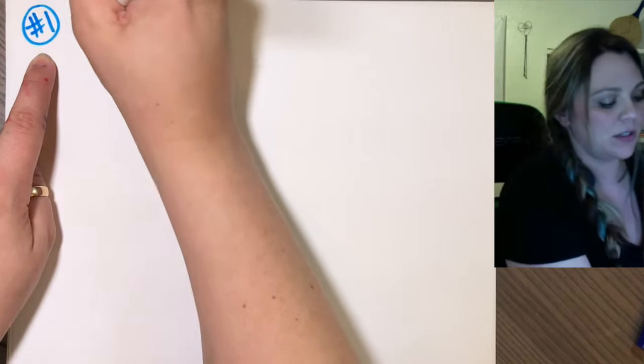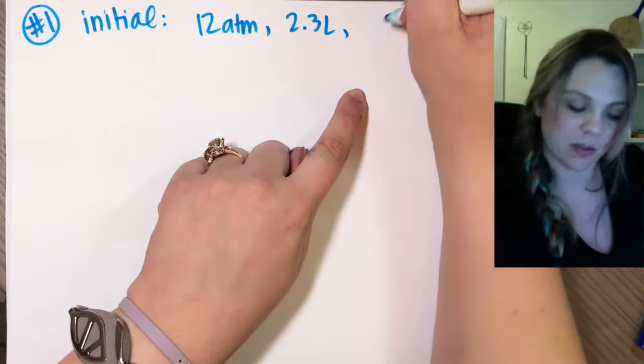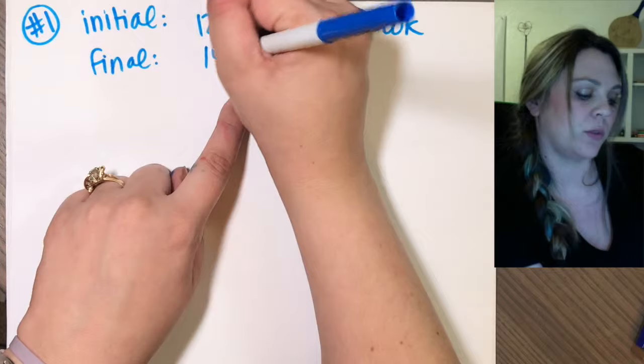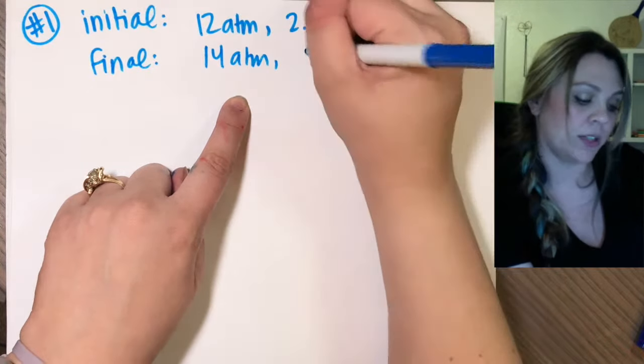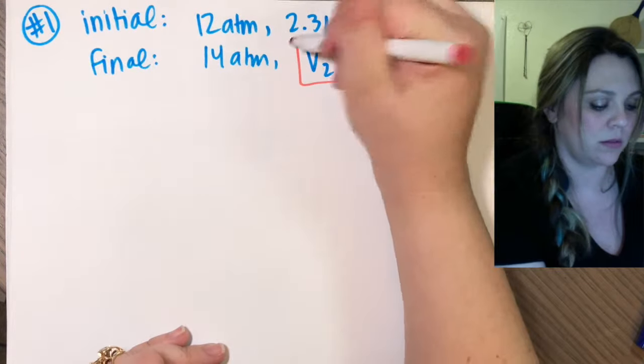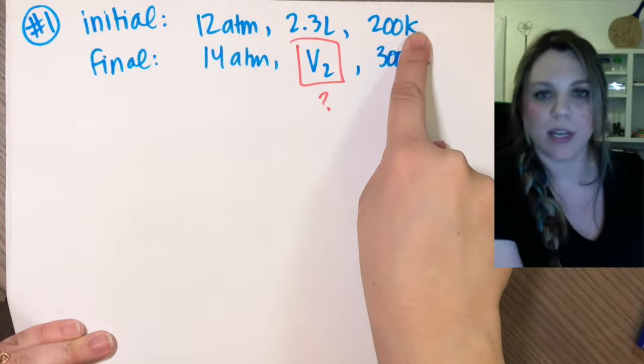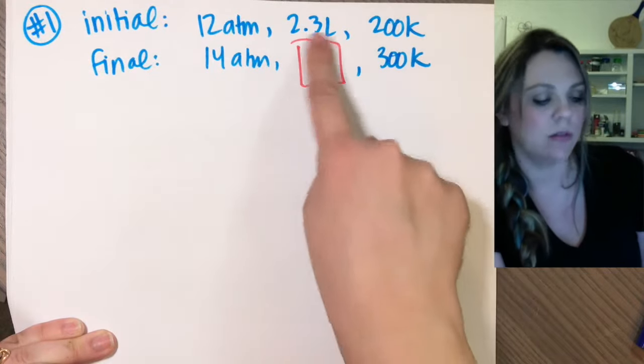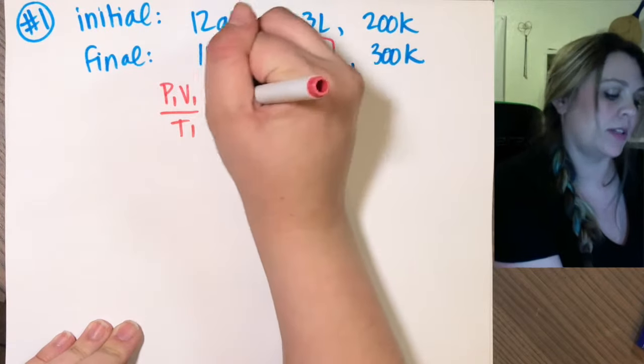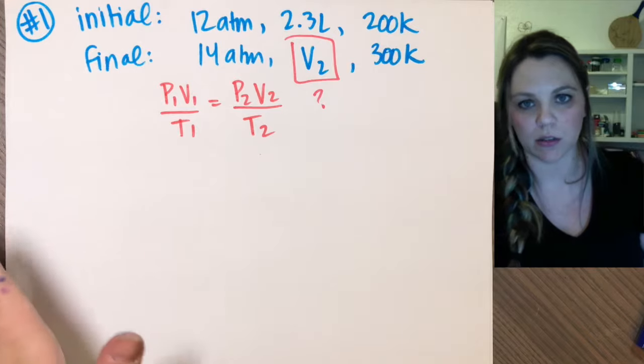Example number one. If I had an initial condition of 12 atmospheres, 2.3 liters, and 200 Kelvin, and my final conditions, I raise my pressure to 14 atmospheres, I don't know what my volume 2 is, and my temperature's also raised to 300 Kelvin. The question is, find volume 2. What is my new volume? This could be said in any type of very long-winded word equation, but just break it down. What are your initial conditions? What are your final conditions? What don't you know? And you just set it up.